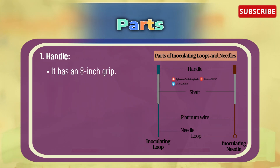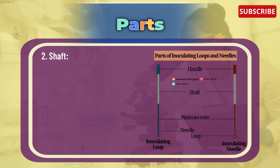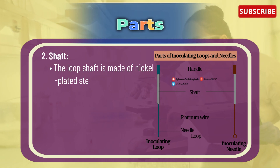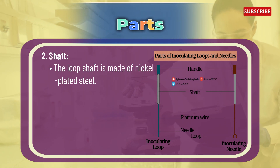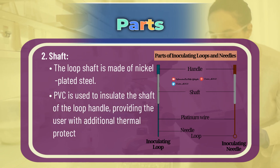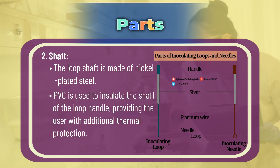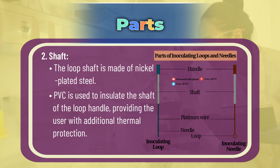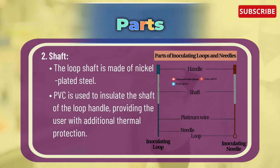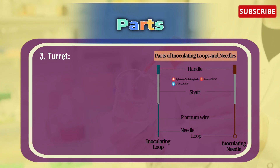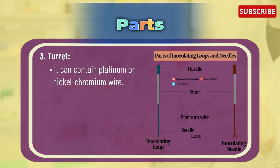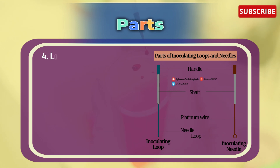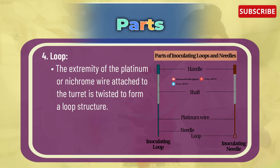Next is the shaft. The loop shaft is made of nickel-plated steel; PVC is used to insulate the shaft of the loop handle, providing the user with additional thermal protection. Next is the turret, which can contain platinum or nickel-chromium wire.